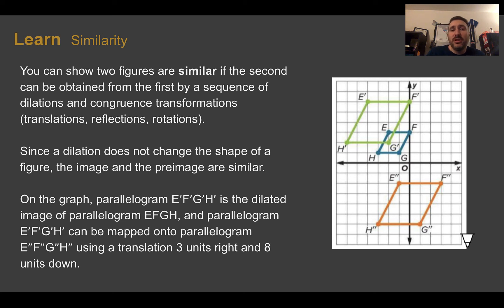You can show two figures are similar if the second, so your image, can be obtained from your preimage by a sequence of dilations, that's the key one here, and possibly other congruence transformations such as translations, reflections, or rotations. So since a dilation does not change the shape of a figure, its image and preimage are similar. Again, similar just means they look the same, they're the same shape, but they're going to be different sizes.